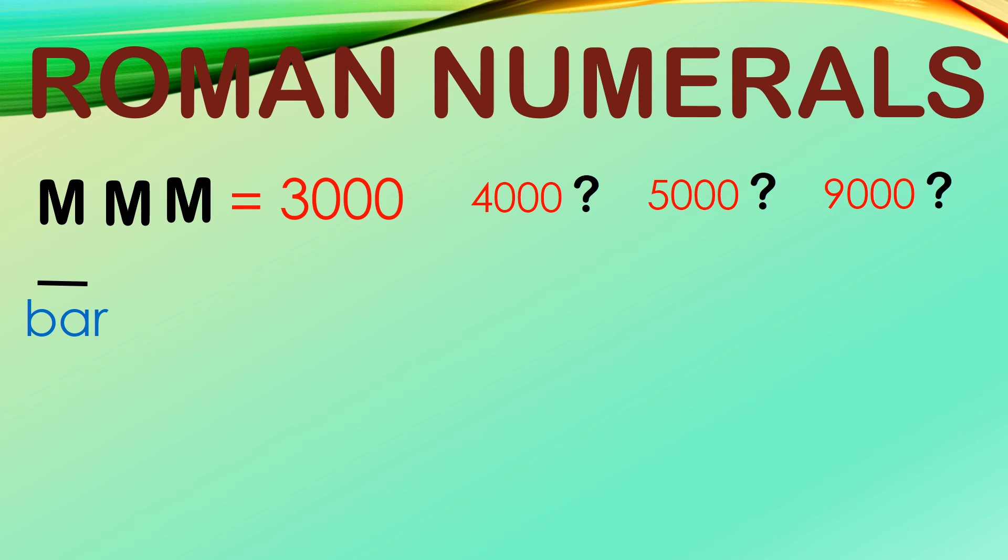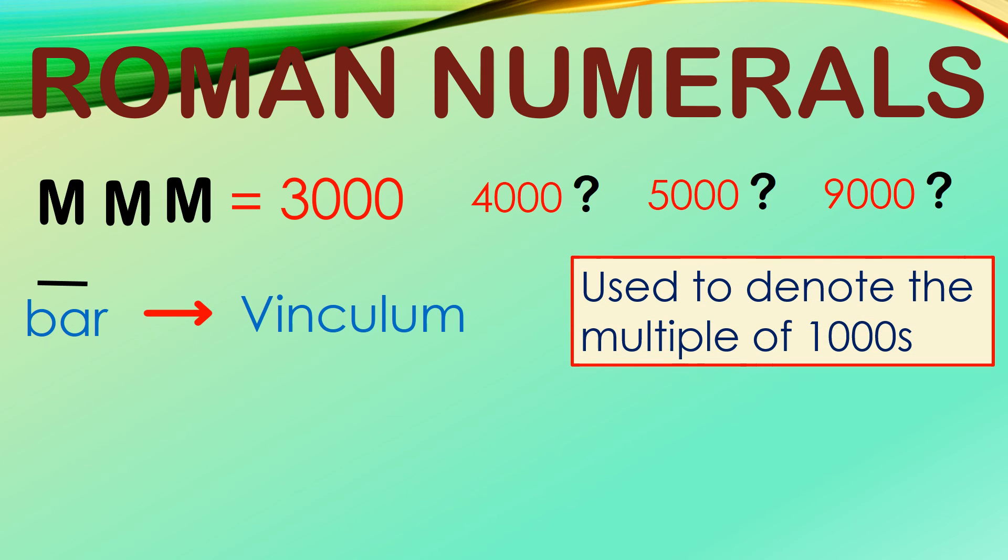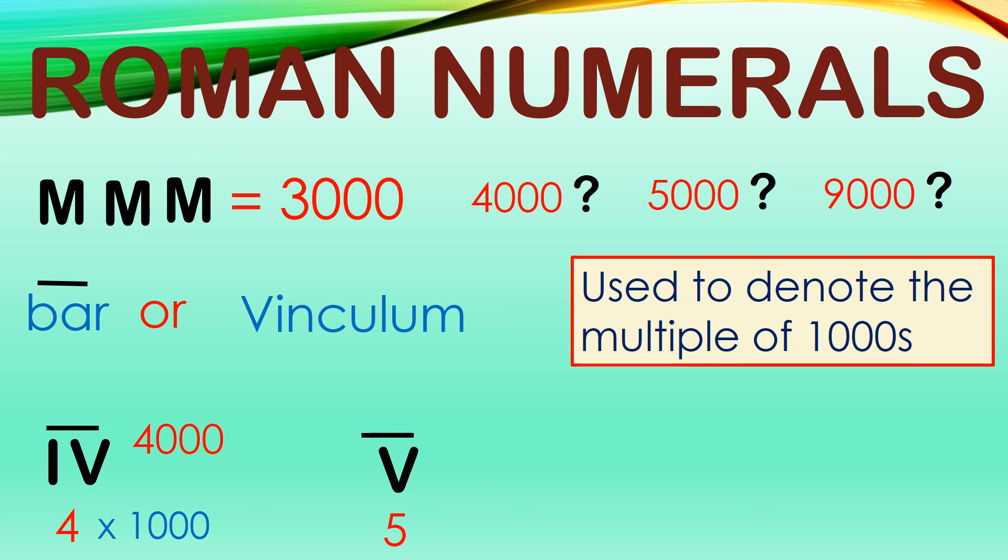A bar is a symbol also known as vinculum. This is used to denote the multiple of thousands. For example, IV is only 4. But if you put a bar or a vinculum, it means multiply by 1,000. So, it is now 4,000. V is 5. With a bar, it is multiplied by 1,000, making it 5,000. So, if we have 9, adding a vinculum or a bar over 9, it is now multiplied by 1,000, making it 9,000. So, you could write any number as you wish with multiple of thousands just by using a bar or vinculum.